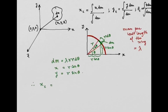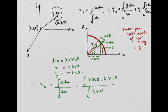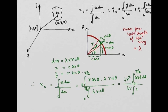Therefore the x coordinate of the center of mass is integration of x dm divided by integration of dm. Putting in the values: the numerator is integration of r cos theta times lambda r d theta, and the denominator is integration of lambda r d theta. The limits are 0 to pi by 2 — when dm is at the rightmost point the angle is 0, and when at the top it is pi by 2. Lambda r squared is constant, so we evaluate integration of cos theta d theta from 0 to pi by 2.